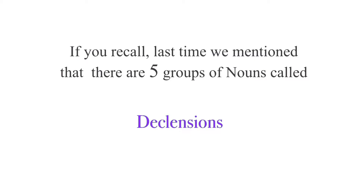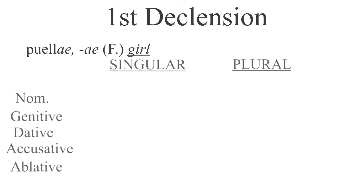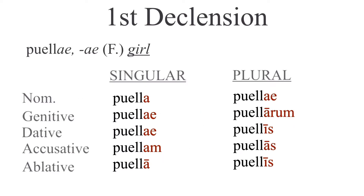If you recall, last time we mentioned that there are five groups of nouns called declensions. We said that the first declension was feminine, because most of the nouns belonging to this class were associated with feminine nouns, like puella and femina. The fact is, there are some masculine nouns, such as agricola and nauta, that prove us wrong. Now, the first declension is easy to recognize by its thematic A vowel, as you can see in the following endings. Simple.